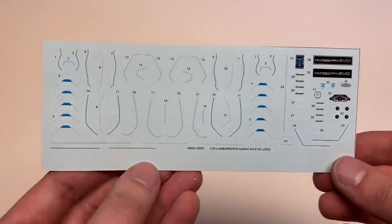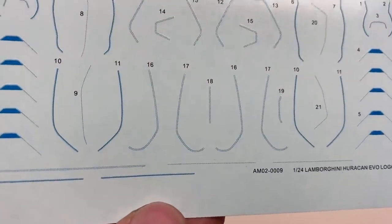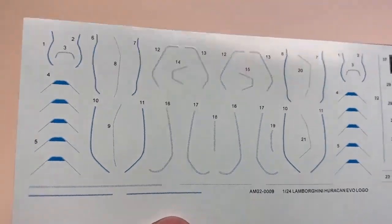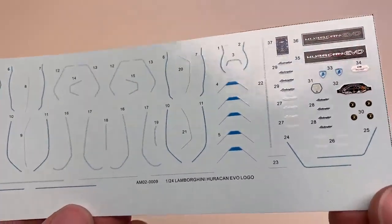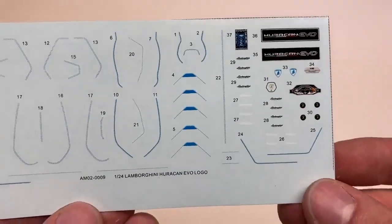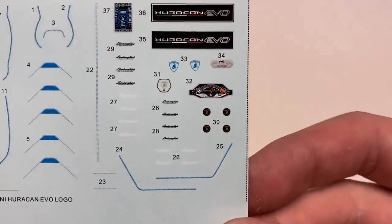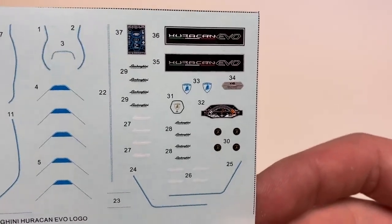With this one, there is also a decal sheet included with a lot of the decals for all of the stitching and some of the extra panels on the interior, which is a really nice add-on if you're going to go blue. If you're going to go any other color, it's not really that useful, but it's still cool to have. Some of the additional details for the gauge cluster and some logos are also there.